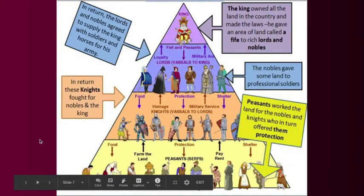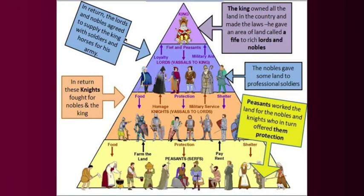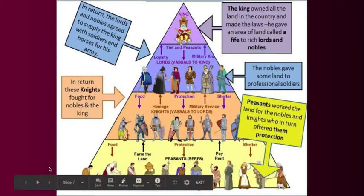We know what this pyramid looks like. The only difference is that above the king would really be the pope and the church, because the pope's most significant power was the ability to excommunicate — to kick you out of the church — which meant you would be going to hell. It was a sure way to be excluded from heaven. So the pope was above everyone, and the church was extremely powerful.